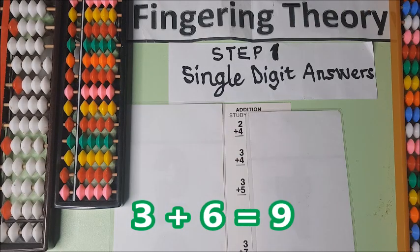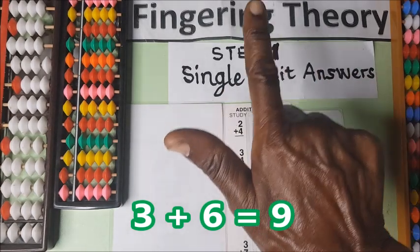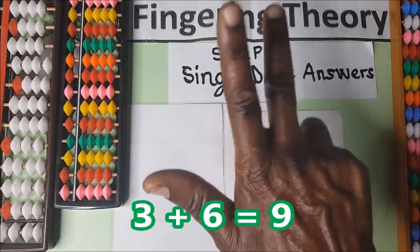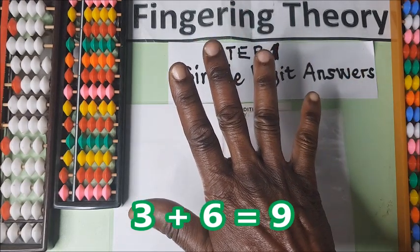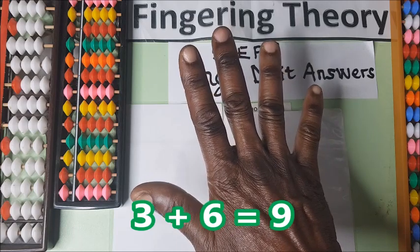Now we have 3 plus 6. This is 5, 6 plus 3. 1, 2, 3, which is 9. 3 plus 6 is 9.